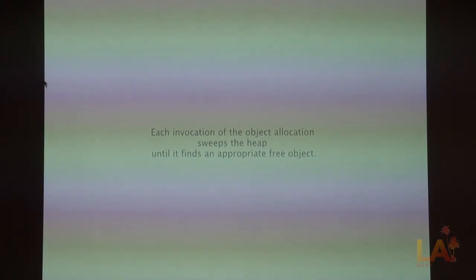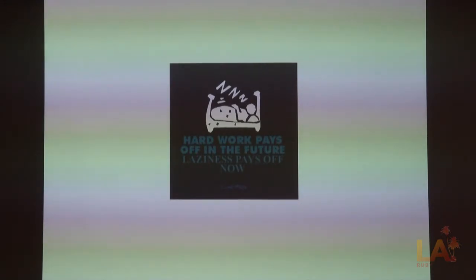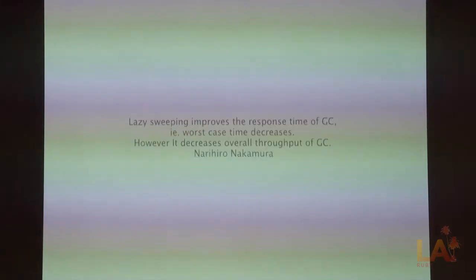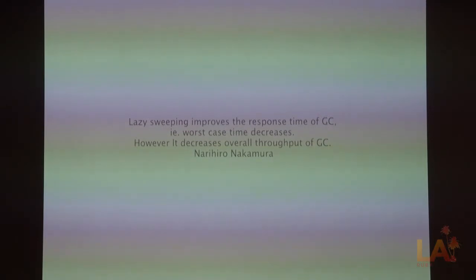There's no whole pushing-onto-the-free-list anymore. It just flips the switch, marks all the ones still alive, and uses the next available one. Lazy sweeping improves your response time of the GC. Now when the GC halts the world, it doesn't have to do as much — it just flips the switches and finds the live ones, which was only the first half of the previous algorithm. Very quick. However, it decreases overall throughput of the GC, because now to allocate a new object it has to do a little marking along the way. So the whole object allocation takes a little longer.